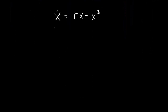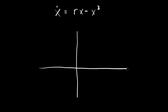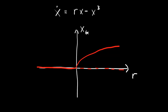Let's draw the bifurcation diagram, plotting x-star, the fixed point, versus the bifurcation parameter r. x-star equals 0 is stable for r negative, drawn as a solid line. When r is positive, this fixed point becomes unstable, drawn dashed. Two new stable fixed points are created at r equals 0, going as plus or minus the square root of r — both drawn as solid lines. This is called a supercritical pitchfork bifurcation.